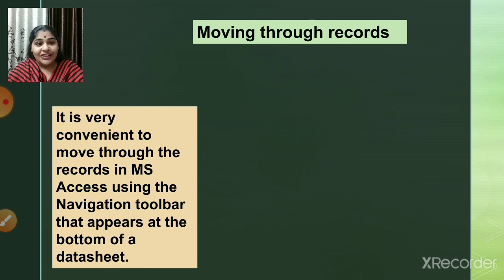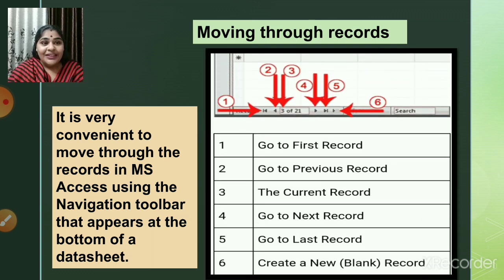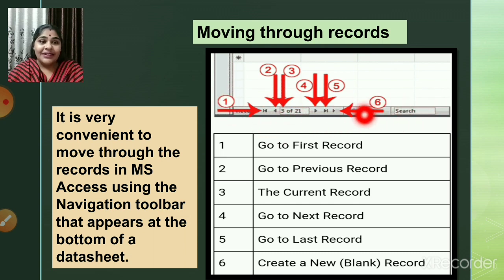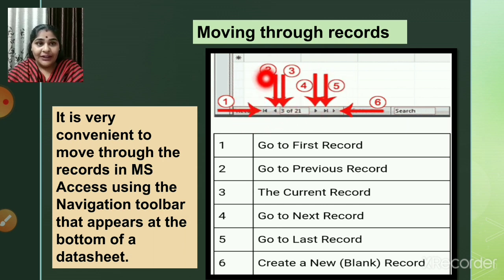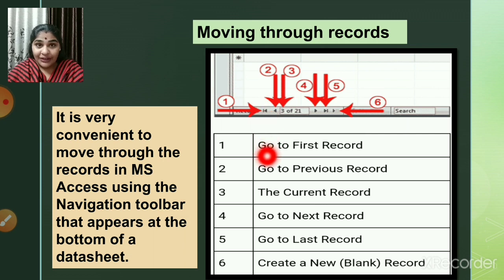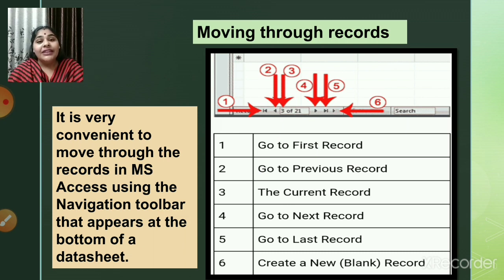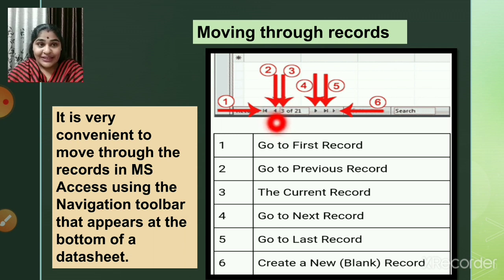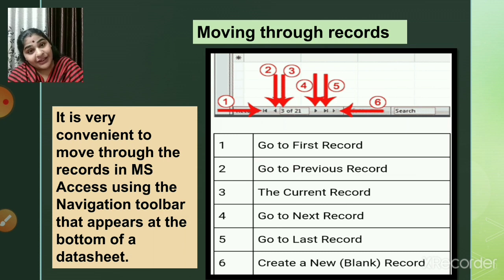The navigation toolbar has six buttons. Button one takes you directly to the first record — if there are 2,000 records and you click it, you go straight to record one. Button two takes you to the previous record. For example, if you are on the 15th record and press button two, you will move to the 14th record.